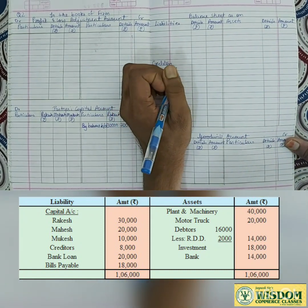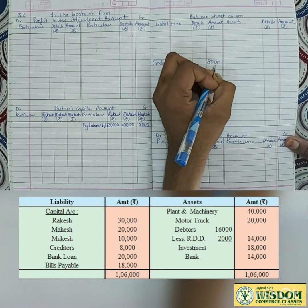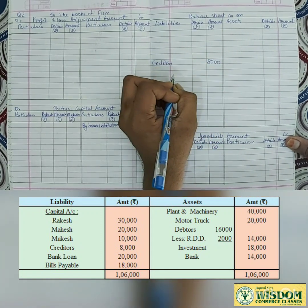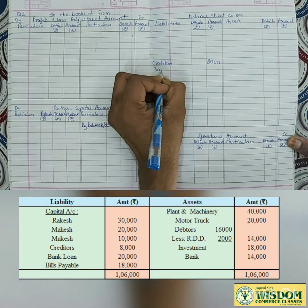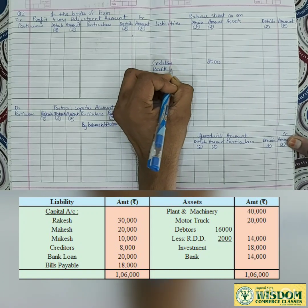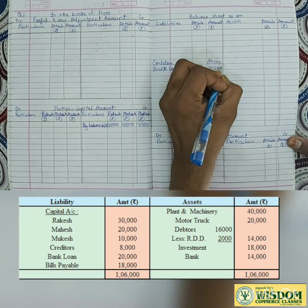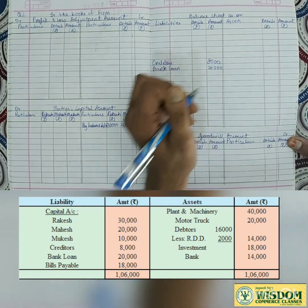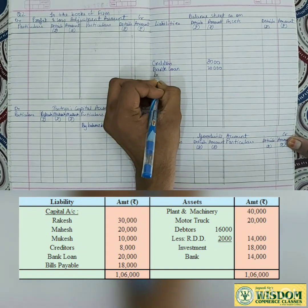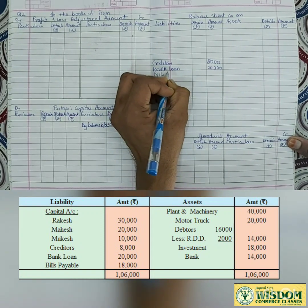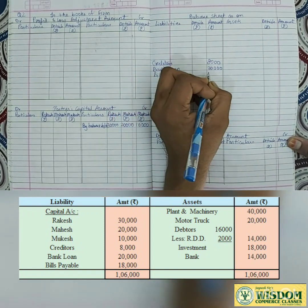Writing the balance sheet: capital accounts for Rakesh, Mahesh, Mukesh - brought down amounts are 30,000, 20,000, and 10,000. On the liabilities side: creditors 8,000 rupees, bank loan 20,000 rupees. Bills payable 18,000 - all three are liabilities with no adjustments needed.